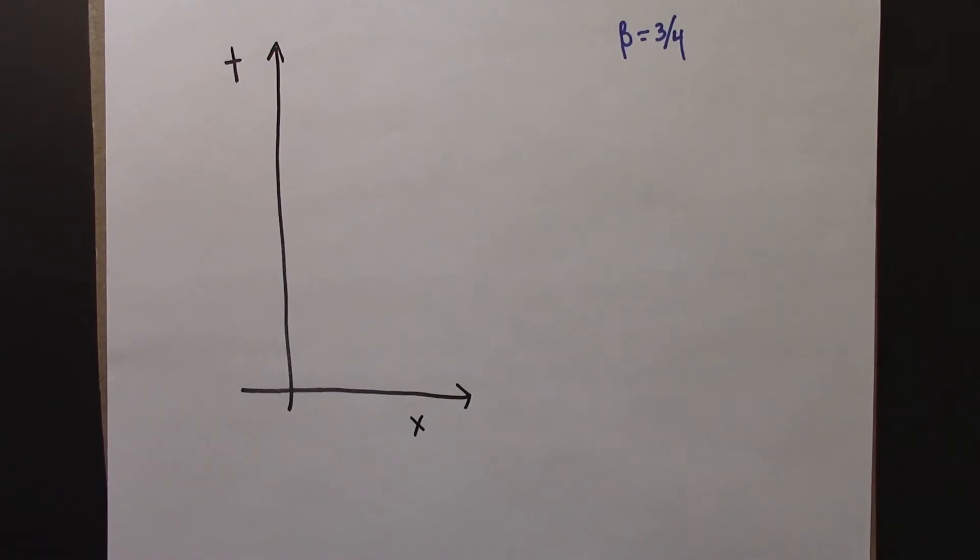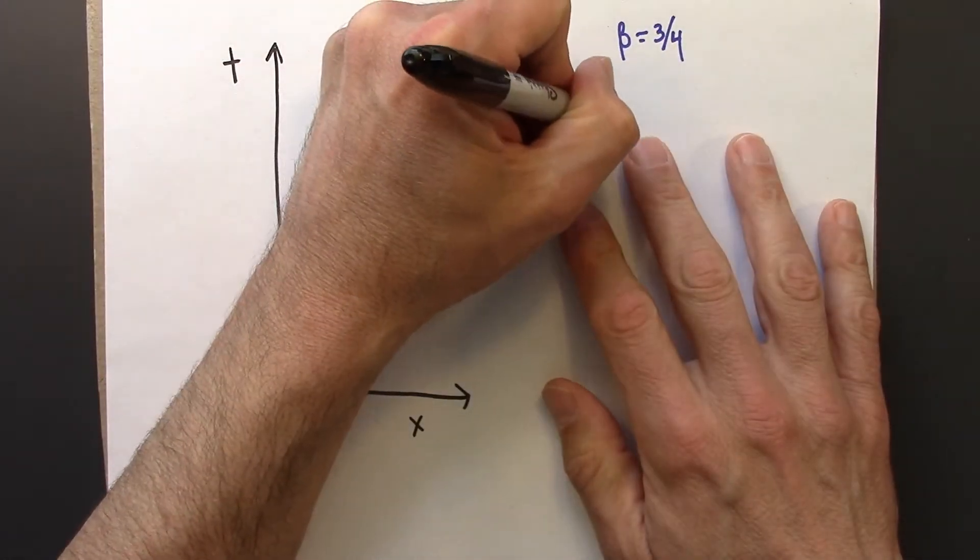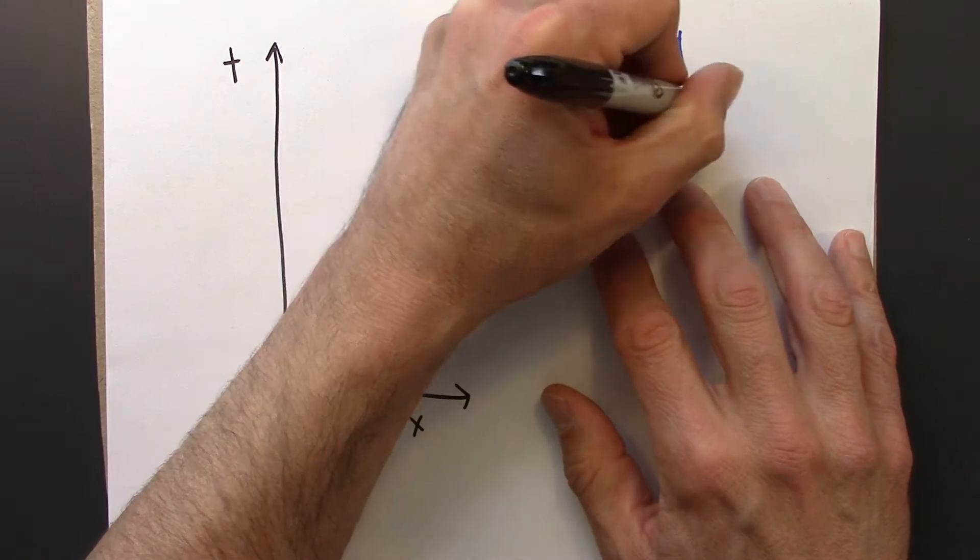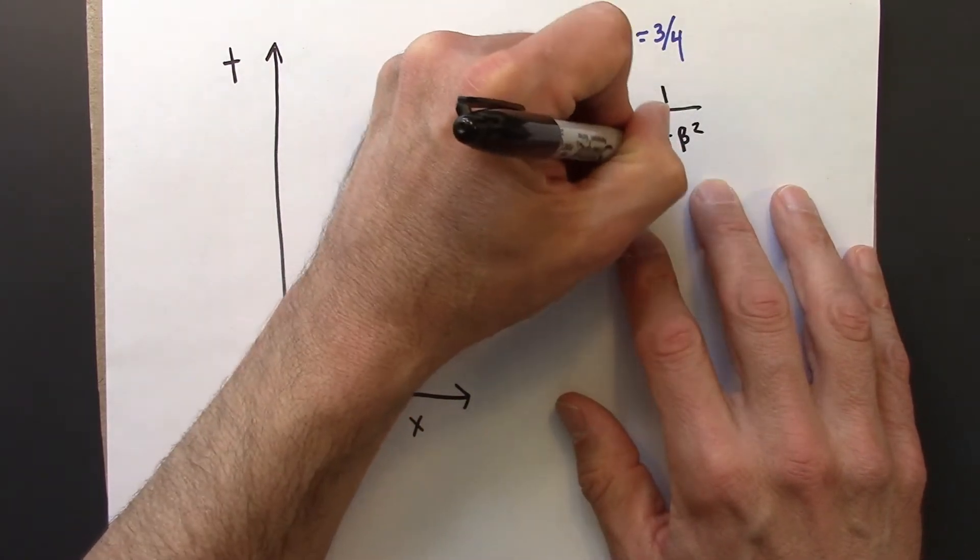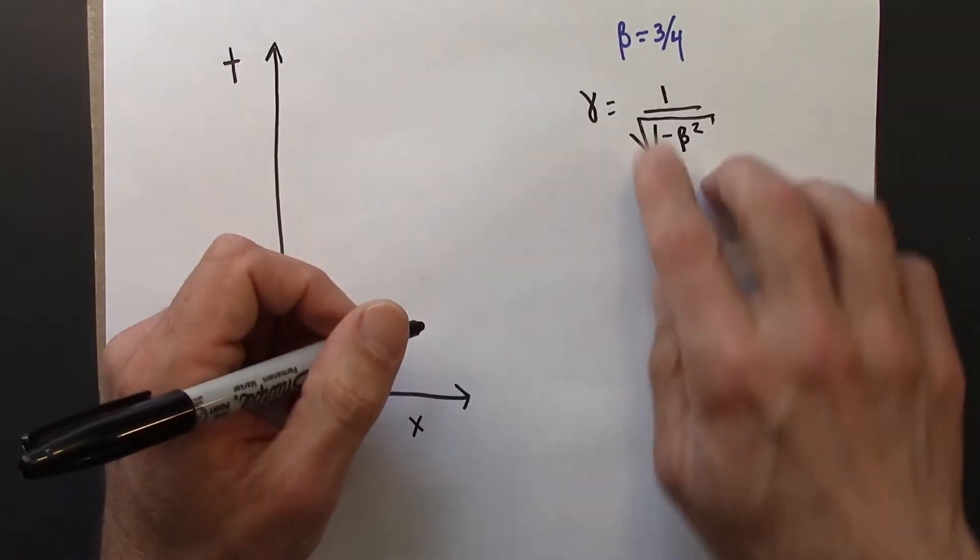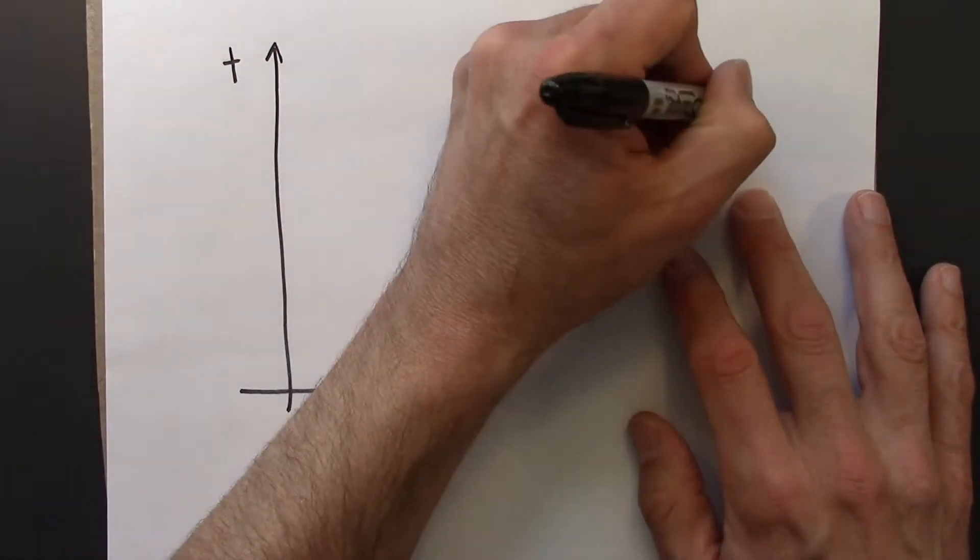We're going to need gamma a lot. So gamma is 1 over the square root of 1 minus beta squared. And we're given beta, so we just plug in.